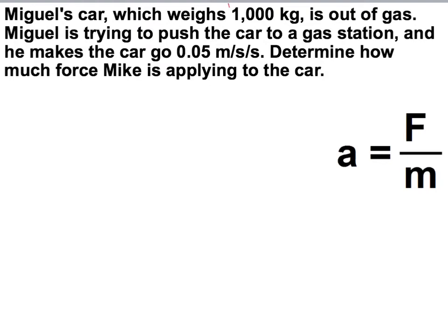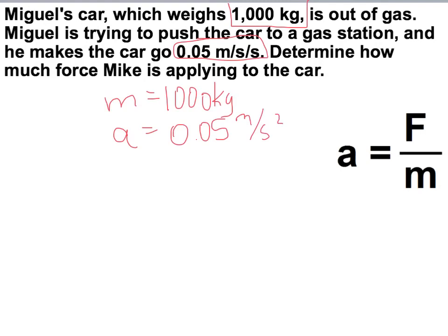So what's given to us? Mass is given to us, and it's 1,000 kilograms. And the acceleration is given to us, and that's 0.05 meters per second squared.